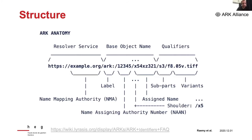An ARC can be subdivided into different parts, similar to the structure of the DOI but with more detail. There are three main things to distinguish: the resolver service, the base object name, and — very importantly — the qualifiers, which we saw in the BNF example. Going into more detail, you will generally find the ARC label, the name assigning authority number that any organization can obtain upon registration, and the assigned name, which is like the suffix in the DOI. Then there is a very fine level of granularity where you can further differentiate elements such as pages, chapters, versioning, and even formats — you can divide the dataset however you want.